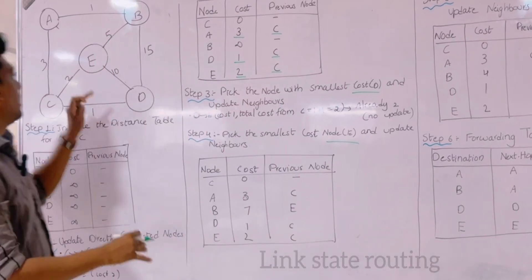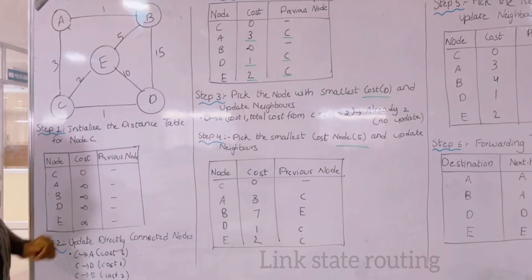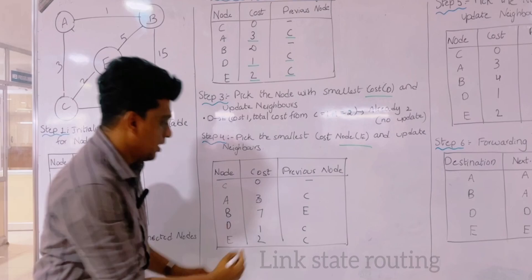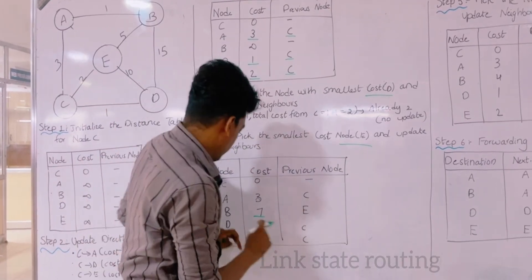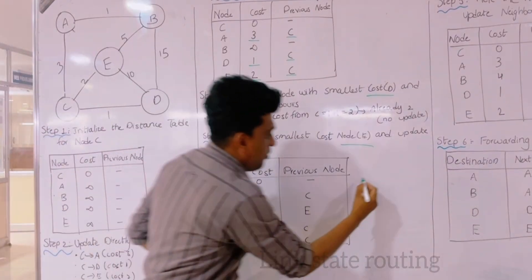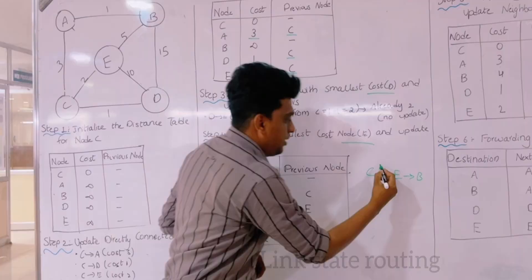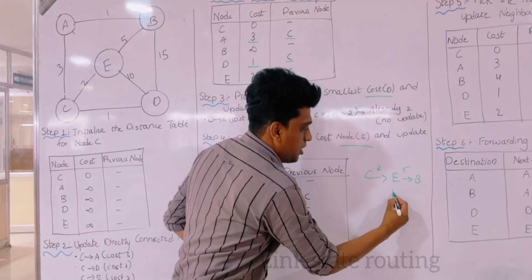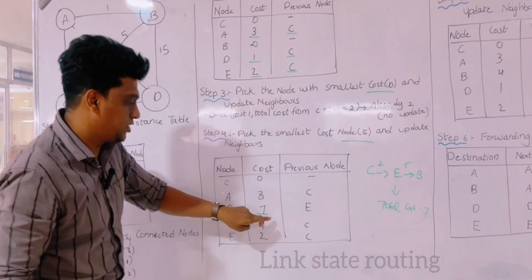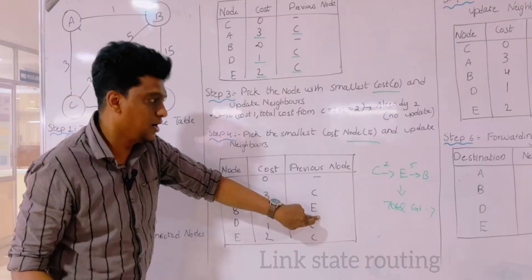So we move to the next neighbor, which is E, because this is the shortest distance. When going through E to B, we are getting a total cost of 2 plus 5, which is 7. So we are connecting C to B with E in between — we travel from C to E first, then from E to B. Here it is 2 and here it is 5, so a total cost of 7. The previous node for B in this case is E.